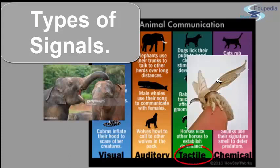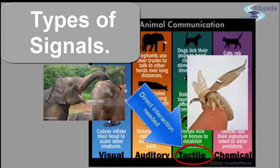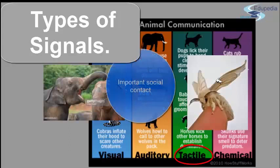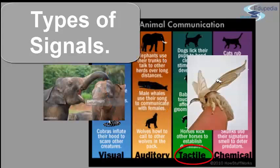The last ones are the tactile signals, in which physical contact occurs between the sender and the receiver and can only be transmitted over a very short distance. Tactile communication is often very important in building and maintaining relationships among social animals. For example, chimpanzees that regularly groom other individuals are rewarded with greater level of cooperation in food sharing. This also is important for developing a certain level of trust and relying on other animals for their survival.